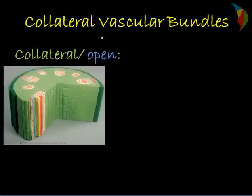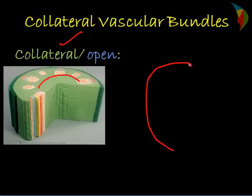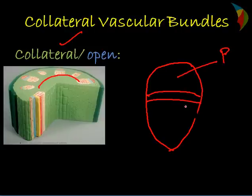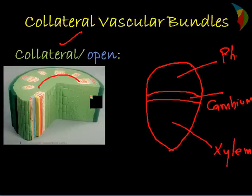The first one is the collateral vascular bundle — collateral and open type. In this type of vascular system, the xylem and phloem occur in the same radius on the same strand. This type is called the collateral type. In the cross section, you will have the phloem tissues in the outer periphery, then the cambium layer, and then the xylem part. The arrangement is in the same radius, which is why it is called collateral type.